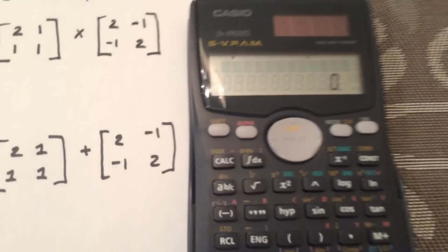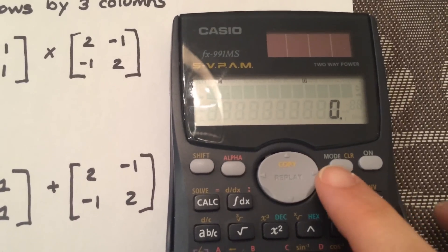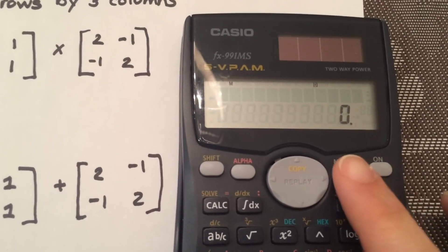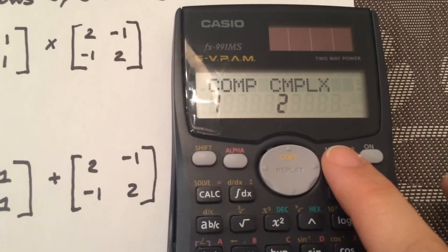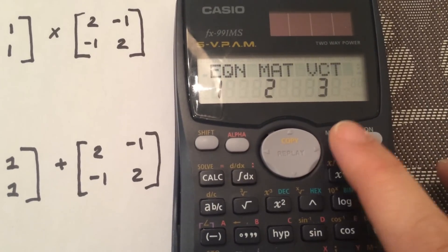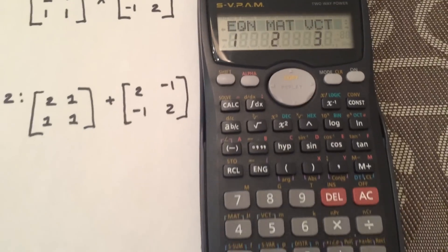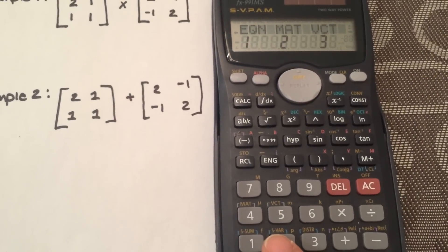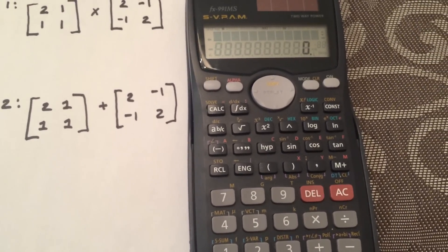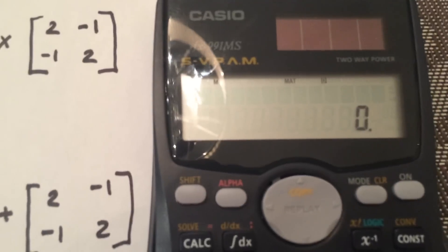The first thing we need to do is on your calculator, you need to go into matrix mode. So you're going to select mode, mode, mode, and then you're going to select 2. You can see that the matrices is at the top.